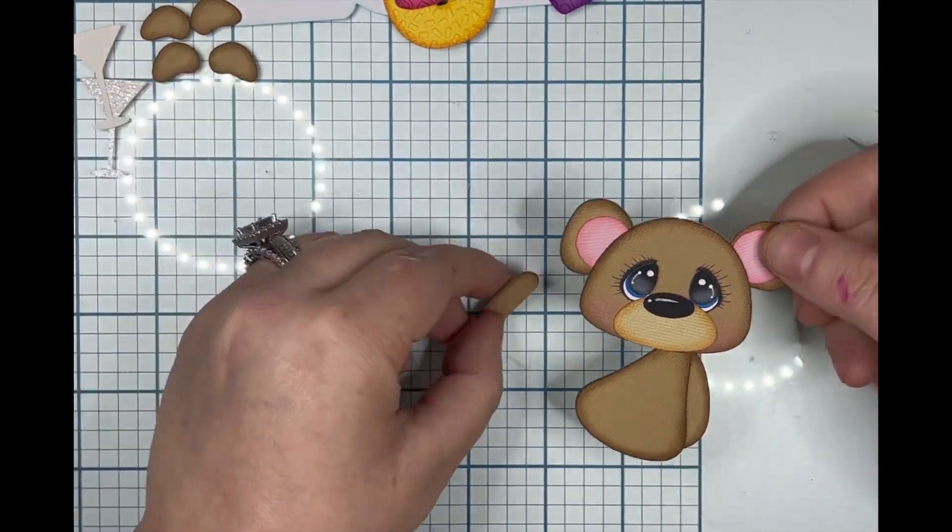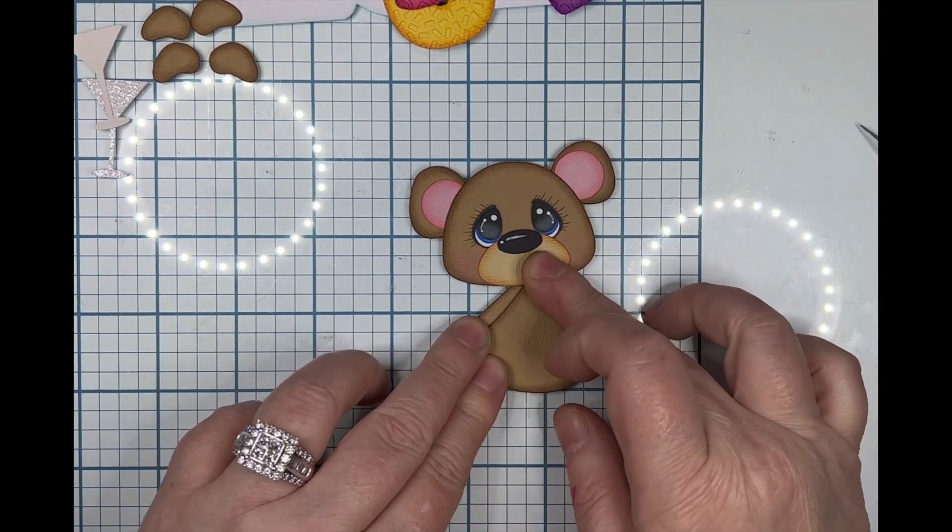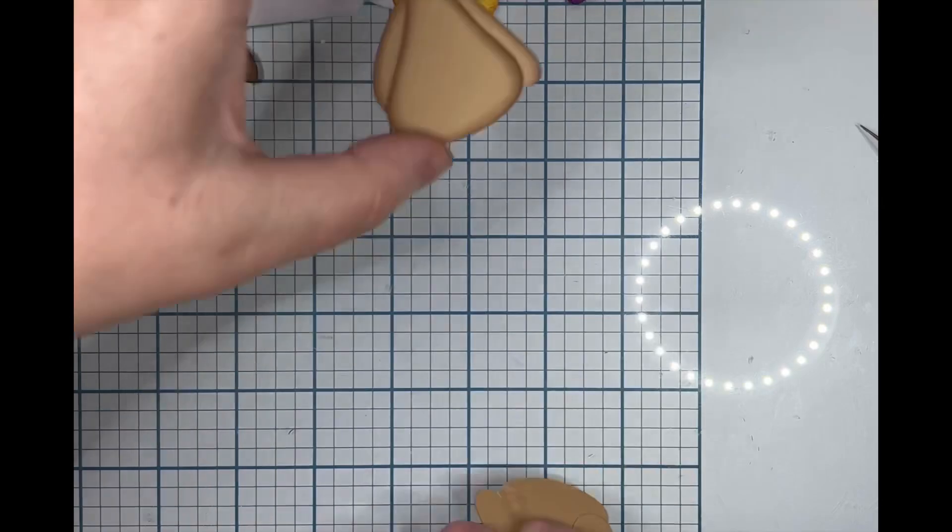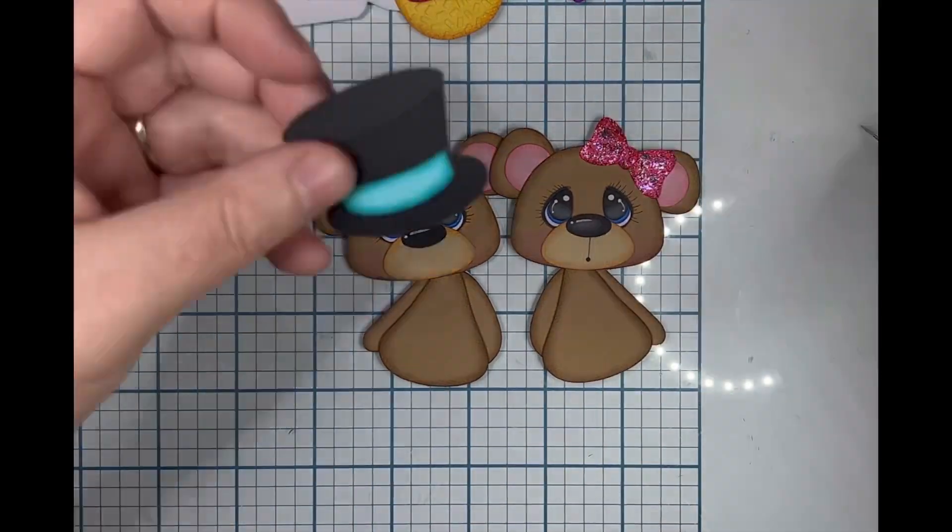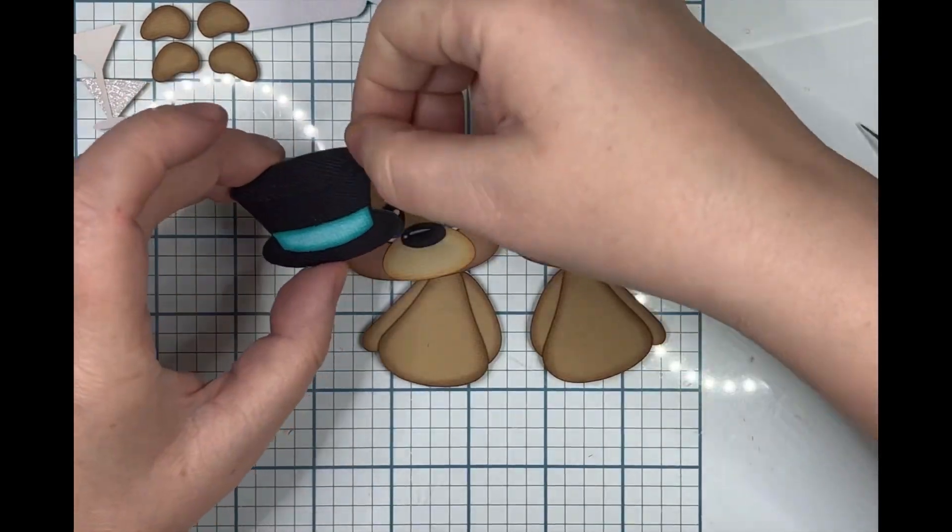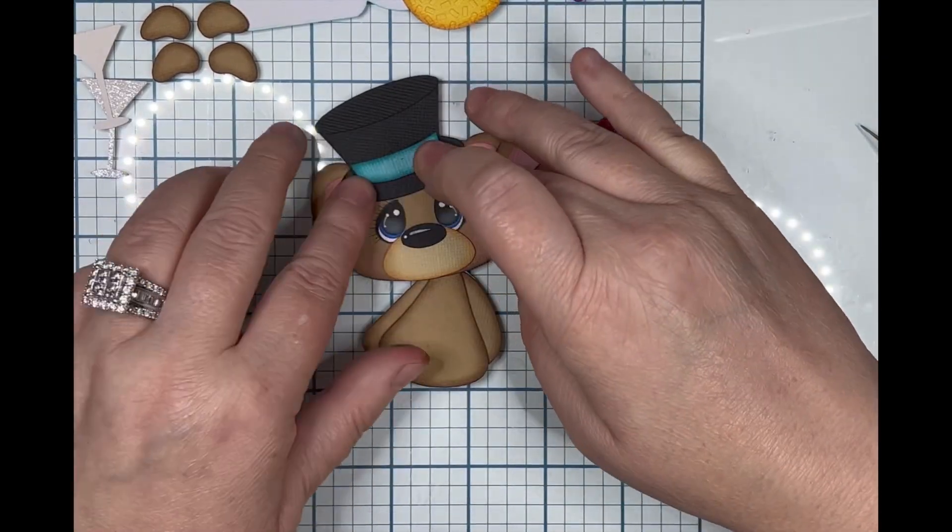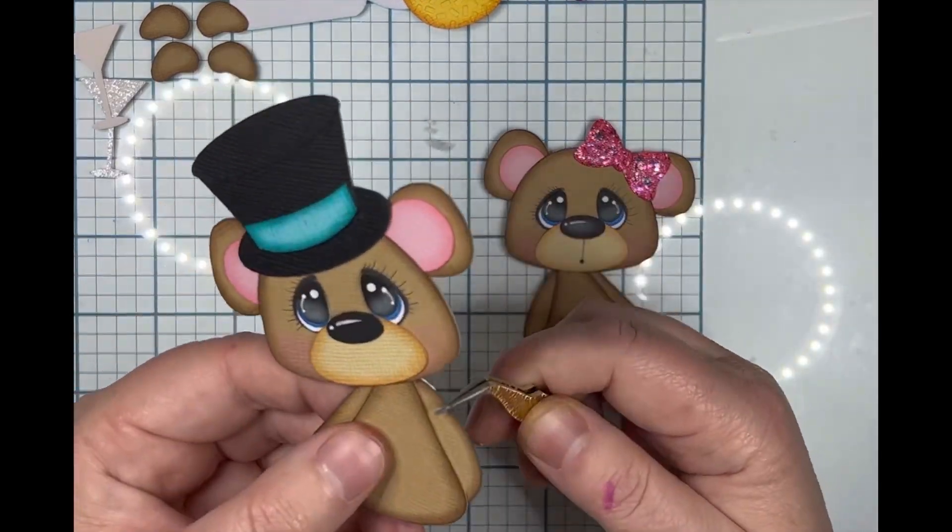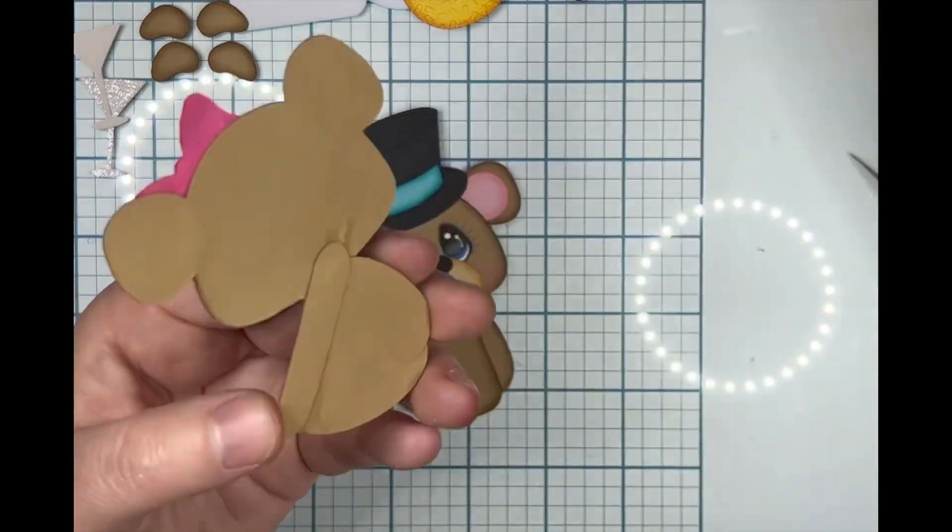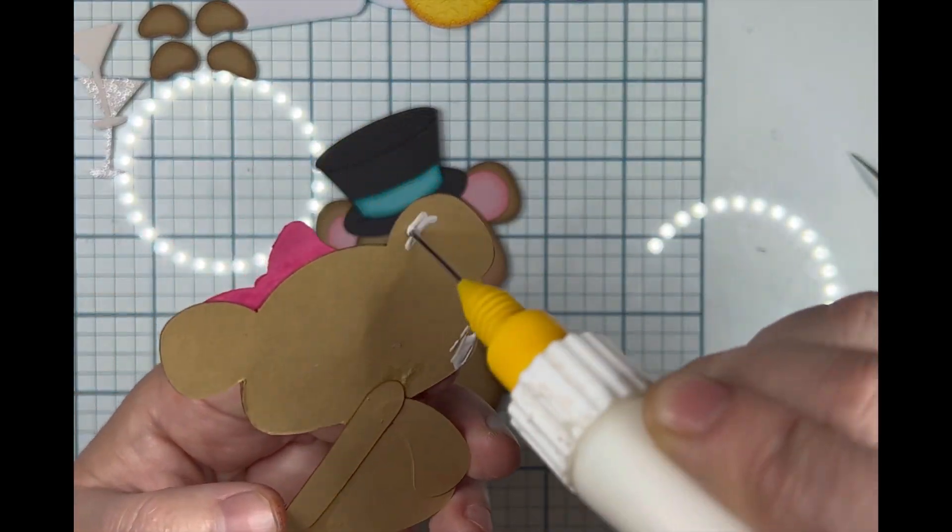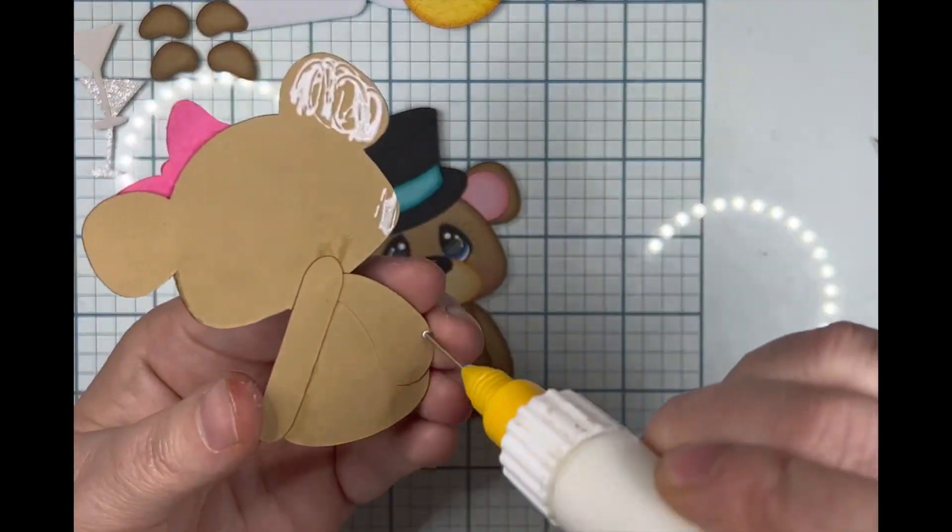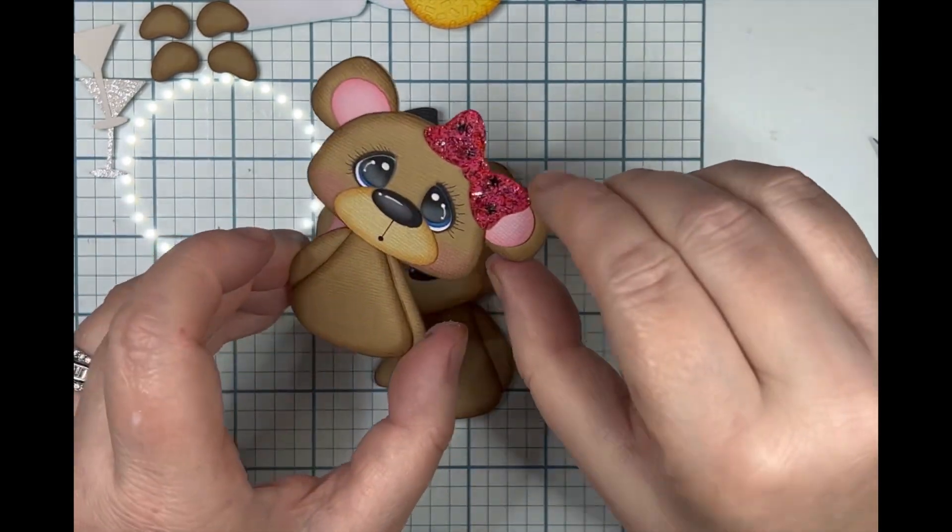His hat is black textured American Crafts paper, and the band around his hat is Encore's swimming pool. Her bow is American Crafts begonia, but I went over it with glue and chunky glitter to give it more personality. When you line the bears up, the ears overlap a small portion of the cheek because the number 2024 sits in front of them.